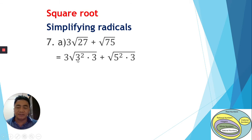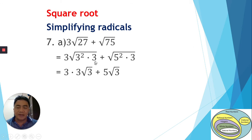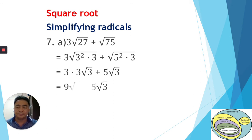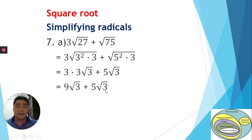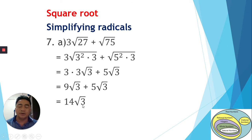We can extract the perfect squares: from √27 we extract 3, leaving √3 inside; from √75 we extract 5, leaving √3 inside. Combining: we get 3√3 plus 5√3. Since the radicands are both 3 and therefore equal, we add the coefficients: 9 plus 5 is 14. So the answer is 14√3.